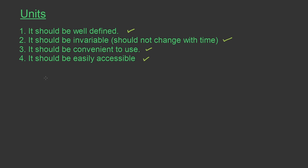Therefore, measurement of any physical quantity involves comparison with a certain basic, arbitrarily chosen, internationally accepted reference standard called a unit. Units are also divided into two based on which physical quantity they measure: fundamental units or base units, and derived units. Units for fundamental or base quantities are called fundamental or base units, and those obtained for derived quantities are called derived units.